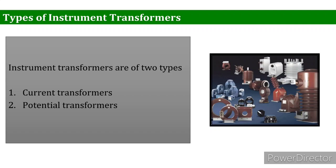CTs and PTs are used in primary metering configurations. Most meters cannot withstand high voltages and currents, so this configuration is used to bring the voltage and current down to a level the meter can read.